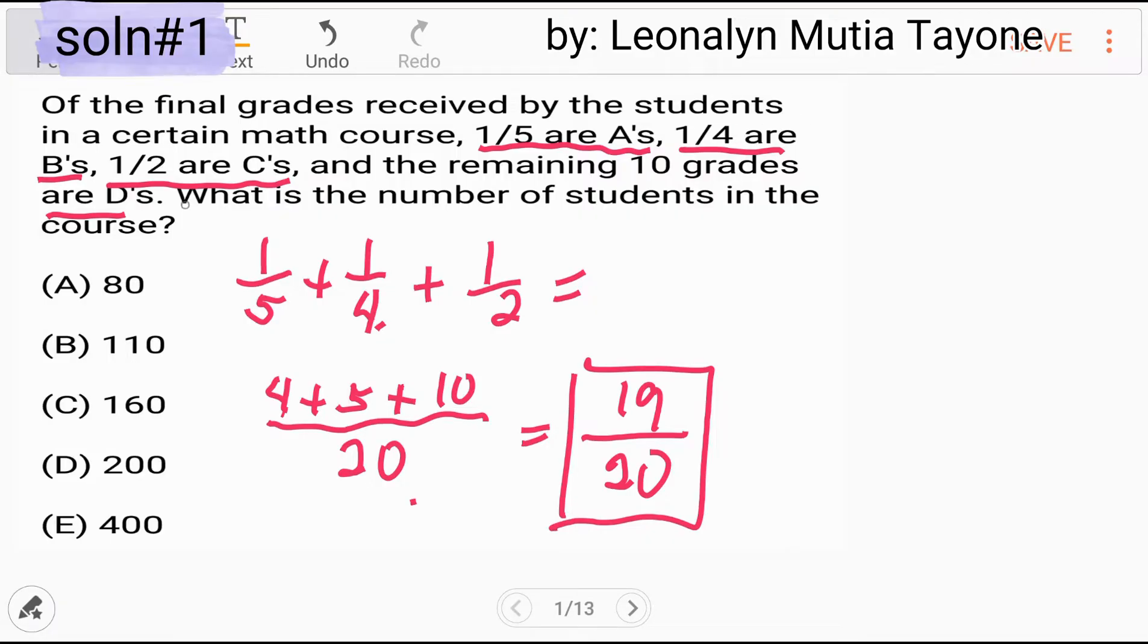So therefore, itong 10, remaining 10 grades are D's. That is 1 over 20. Kasi as a whole, 20 over 20. So minus 19 over 20, and that is 1 over 20.